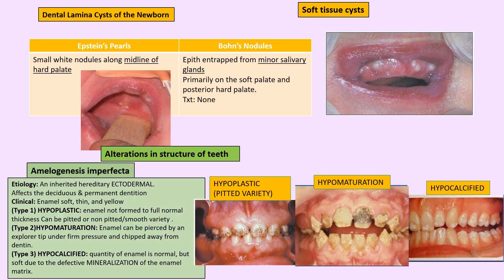Dental anomalies: Epstein pearls are on the midline of the hard palate; Bohn's nodules are at the junction of the soft palate and hard palate. Amelogenesis imperfecta is a very important condition with three varieties: hypoplastic, hypomaturation, and hypocalcified.